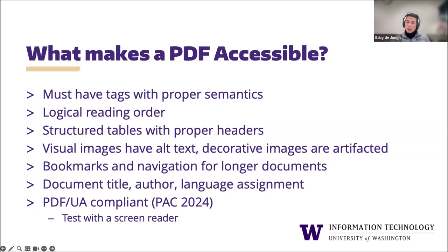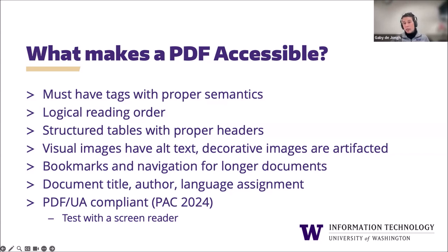The only way to tell if a PDF document is PDF-UA compliant is to run an accessibility report with a third-party application called PAC 2024. PAC 2024 is available for free for Windows users — it's not available for Mac users at this time. PAC 2024 is managed by the PDF Association, and I've included a link to that product at the end of this slide deck. This application provides an accessibility report and lists any errors it encounters, but it doesn't give the author the ability to correct those errors — that has to be accomplished with PDF remediation software such as Adobe Acrobat Pro.